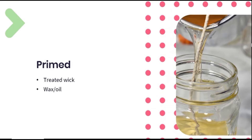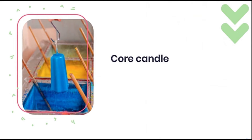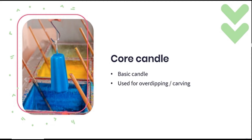The term primed refers to whether or not a wick has been pre-treated with wax or oil so that it can be used to produce a candle. A wick that hasn't been primed will contain air which will affect the burning. We prime our wicks to eliminate the air and improve on the burning quality. A core candle is a basic, normally uncoloured, unscented candle used as the foundation for an over-dipping process or to be used in candle carving. These candles will make up the core of a larger candle.